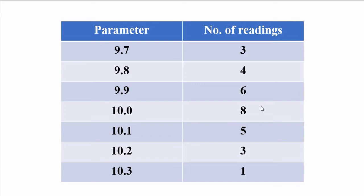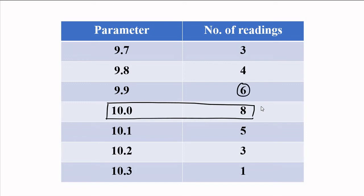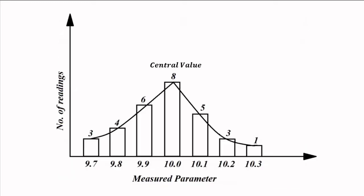The results obtained were: 9.7 appeared 3 times, 9.8 appeared 4 times, 9.9 appeared 6 times, 10.0 appeared 8 times, 10.1 appeared 5 times, 10.2 appeared 3 times, and 10.3 appeared 1 time. This is represented as a histogram or frequency distribution curve, with measured parameter values on the x-axis and number of readings on the y-axis.